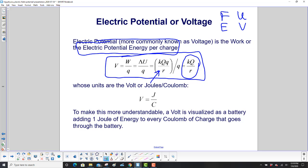The units are volts or joules per coulomb. To make this more understandable, a volt is visualized as a battery adding one joule of energy to every coulomb of charge that goes through the battery.